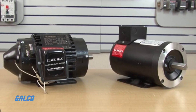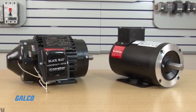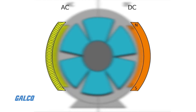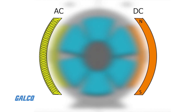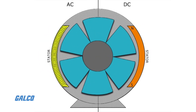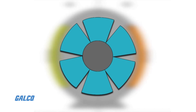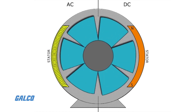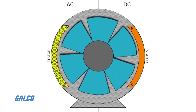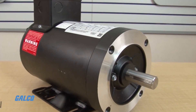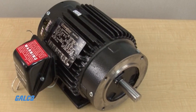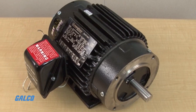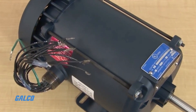AC motors are powered and controlled by AC input voltage. They rely on an outside stator with coils that produce a rotating magnetic field, and an inside rotor attached to the output shaft producing a second rotating magnetic field. The interaction between these rotating fields induces the rotation of the motor. AC motors are less efficient than DC motors because they have to create their own magnetic field, but they offer greater control.